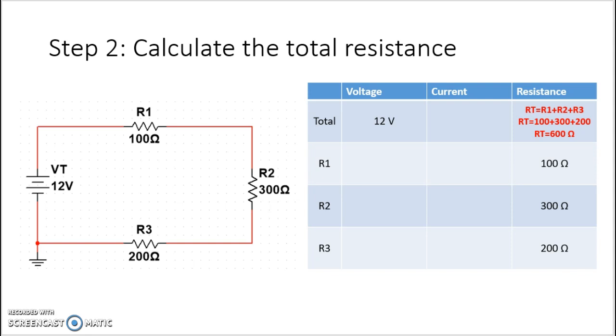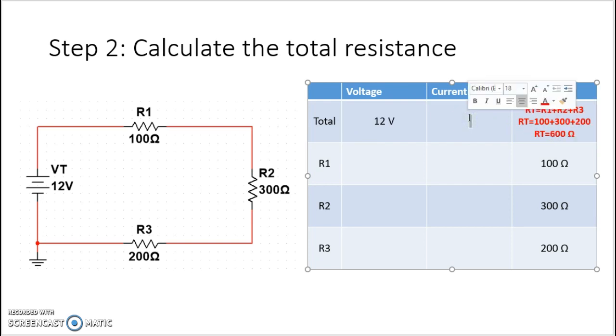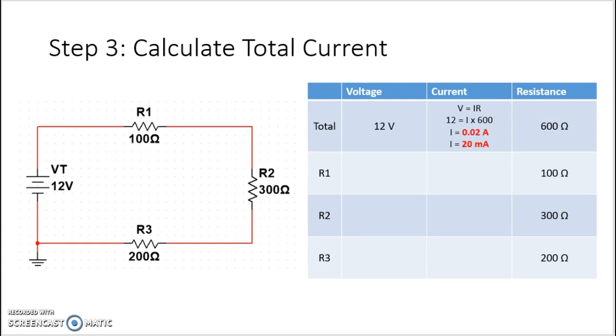Now that we have this, the nice thing is you may notice that if V is equal to I times R, our goal in each of these rows going across would be: anytime we have two quantities—if we have voltage and we have resistance, that means we can solve for current. And if we have current and resistance, we could solve for the voltage. You just need two of the three to solve for the unknown. That's where we are with the total right now. We have 12 volts total and we have 600 ohms of total resistance, so therefore I can solve for the total current. 12 is equal to I times 600. We take 12 divided by 600, we get 0.02 amps, which we would probably write in engineering notation or using SI prefixes as 20 milliamps.